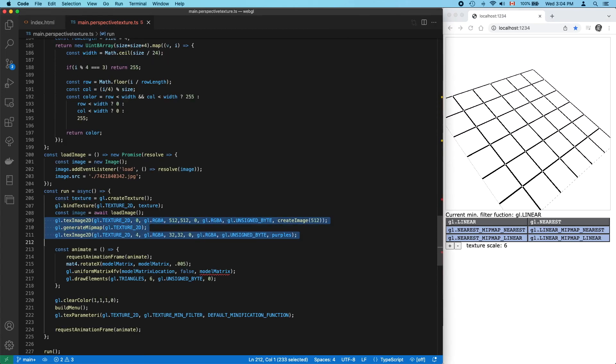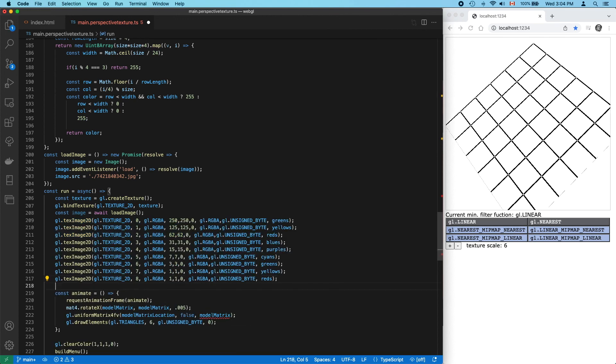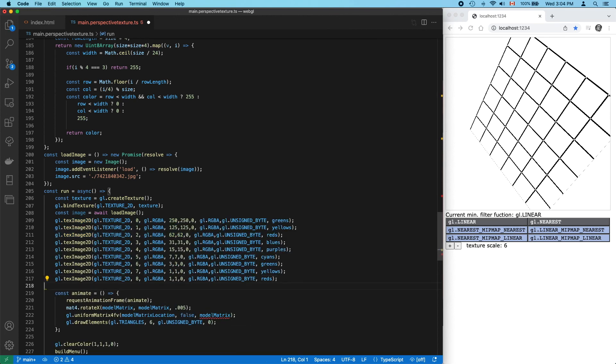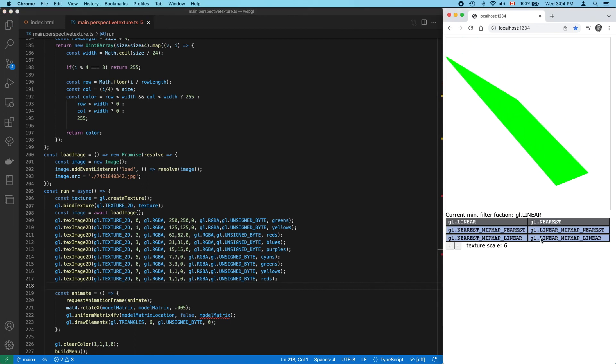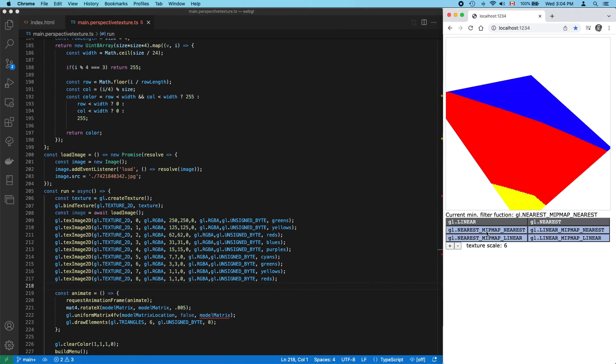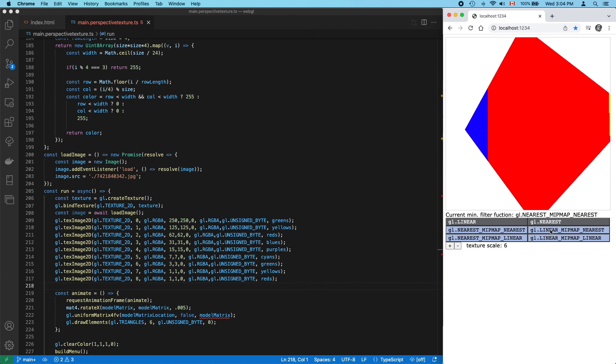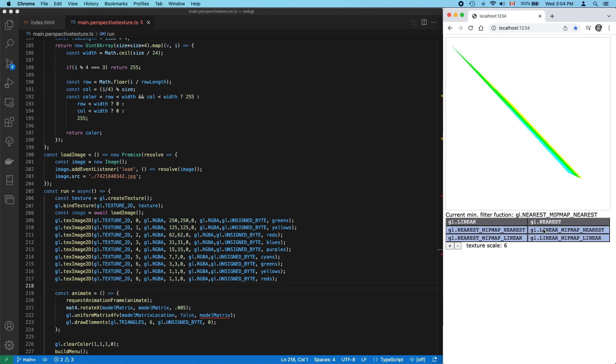Finally, let's close out this video by looking at what things look like if we give every mipmap level its own solid color. Take a look at what happens with each minification function. Remember that these colors represent only the mipmap level. The source images for each level are just a solid color.